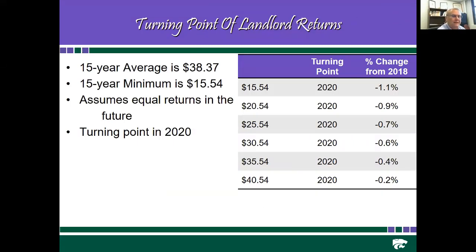In Barton County, the 15-year average of the landlord net income is $38.37, and the 15-year minimum is $15.54, which occurred in crop year 2017. Assuming equal returns in the future, the turning point under any of the scenarios I ran was 2020. If the landlord net income ended up being $40-$50, it would fall by 0.2%; if it remains fairly low, it would fall by 1.1% from 2019 to 2020. We are at this turning point in 2020.